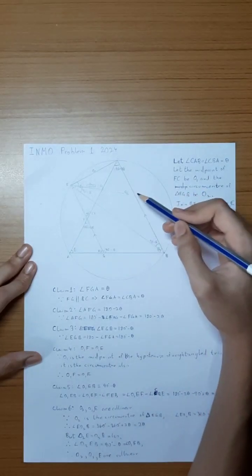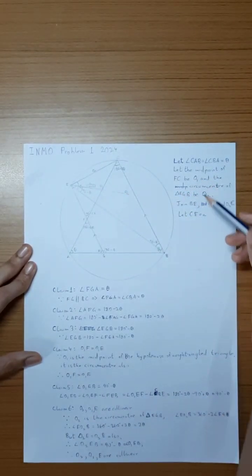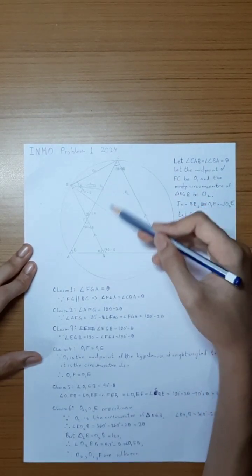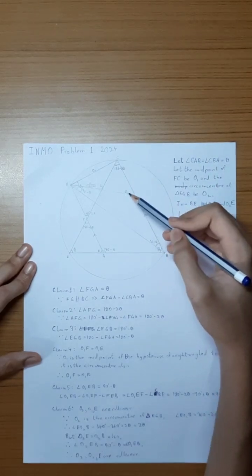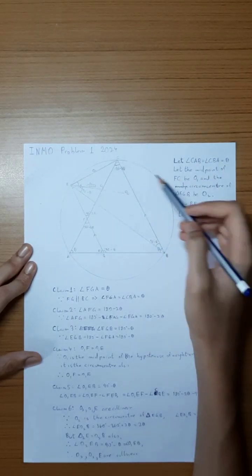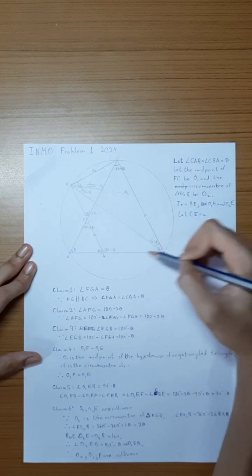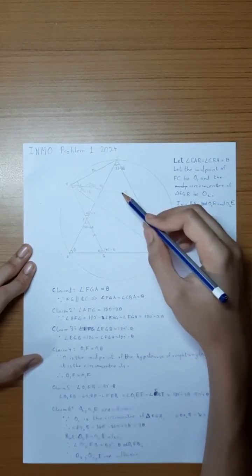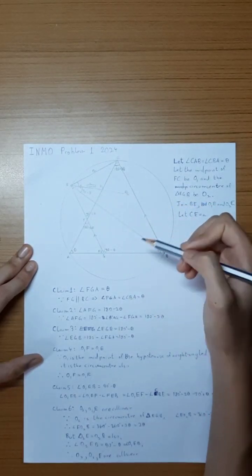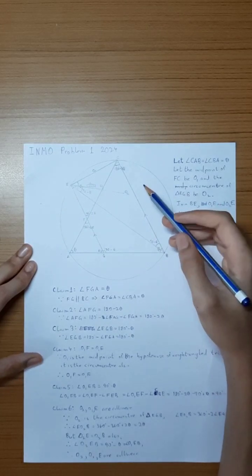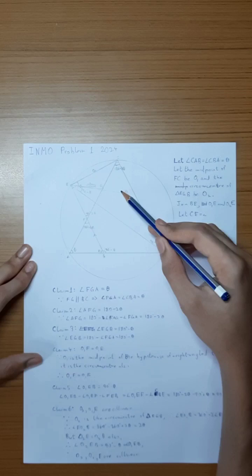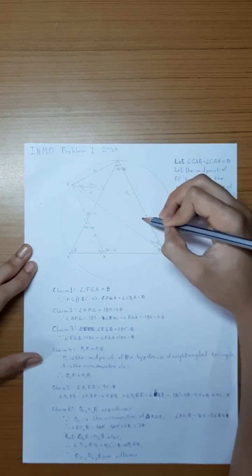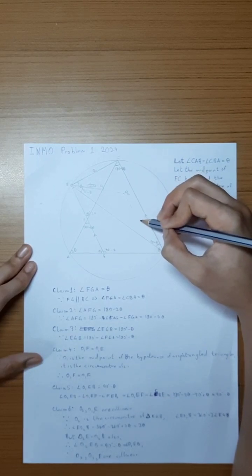We claim that O1E and O2E are collinear. Since O2 is the circumcenter of triangle EGB, angle EO2B equals twice the angle EGB, because the inscribed angle is half the central angle. So 180 minus 360 minus 2 theta gives the reflex angle, and angle EO2B becomes 2 theta.